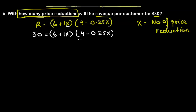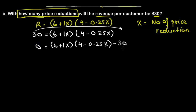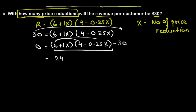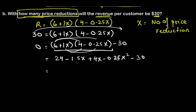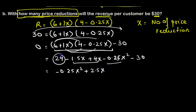Since x appears in two spots, we move the 30 to the other side so the equation equals zero. We expand: 6 times 4 is 24, 6 times negative 0.25x gives minus 1.5x, x times 4 gives plus 4x, and x times negative 0.25x gives negative 0.25x squared, minus 30. Collecting like terms: negative 0.25x squared plus 2.5x plus negative 6 equals zero.